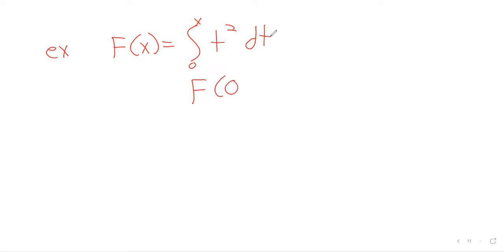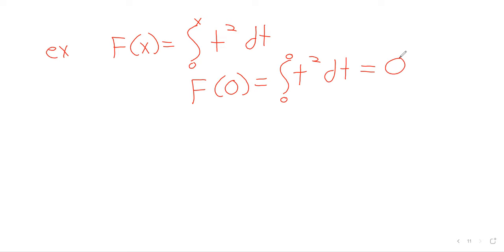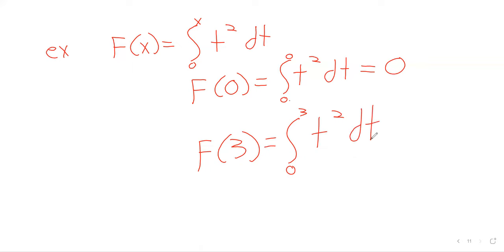F of zero, for example, is the integral from zero to zero of t squared dt — as pretty much the only integral we know how to take. The integral from a to a is always zero. F of three, for example, is the integral from zero to three of t squared dt. We do not, at this point in time, know how to take the integral from zero to three of t squared.